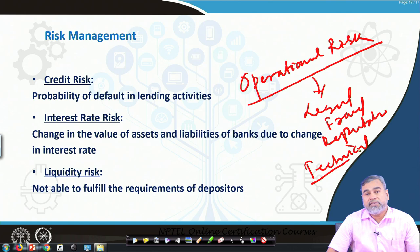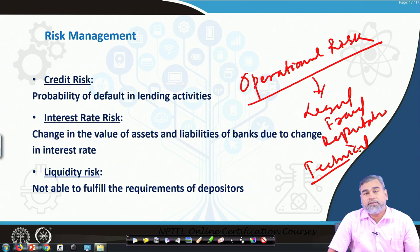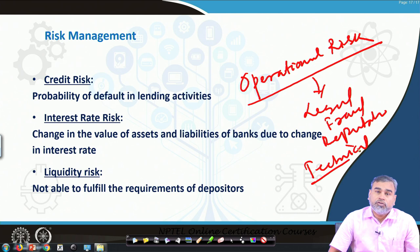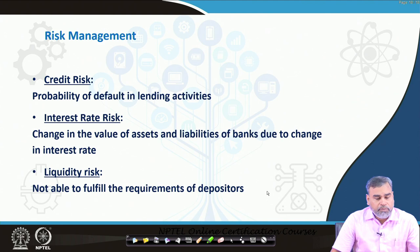Credit risk is the probability of default in lending activities. Interest rate risk means the change in value of assets and liabilities due to changes in interest rates. Liquidity risk means that at any point, a depositor can go to the bank and want to withdraw money — if the bank cannot pay them, it creates negative sentiment. Banks manage their positions so this situation never arises, and they manage operational risk related to efficiency as well.